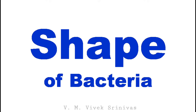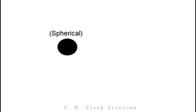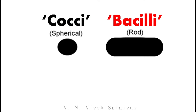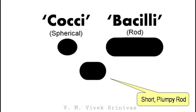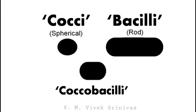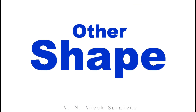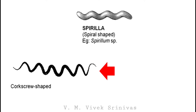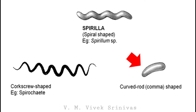A brief discussion on the different shapes of bacteria. Some bacteria are spherical shaped — this type is called cocci. Bacteria can also be rod shaped — called bacilli. If in between, that is, short plump rod shaped, they are called coccobacilli. Other shapes include spiral shaped — called spirilla, with an example being Spirillum species; corkscrew shaped — called spirochetes; and curved rod or comma shaped — called vibrio species.